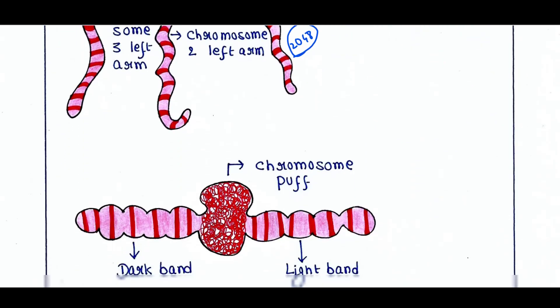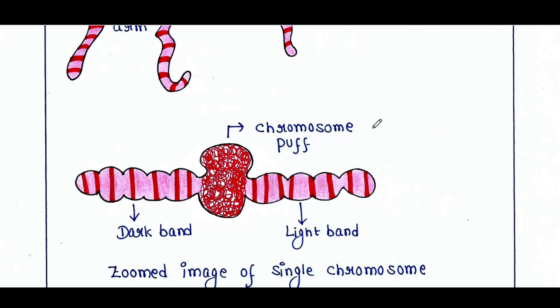If we zoom into one chromosome arm, we can find a puff-like structure called a chromosome puff. The dark band contains genes which need to be transcribed. The dark band contains very coiled DNA, so before transcription, that highly coiled DNA needs to be uncoiled or unfolded. During that unfolding phase, the chromosome will swell — and this swelling is called a chromosome puff. Chromosome puffs are found only in dark bands, because light bands already contain euchromatin with less coiled DNA.